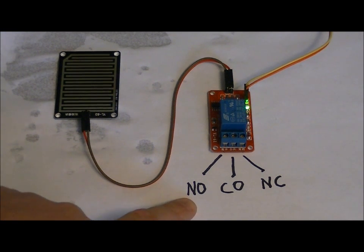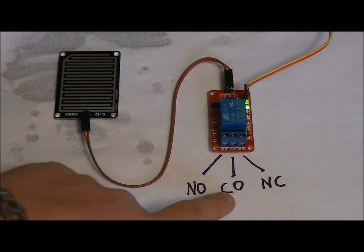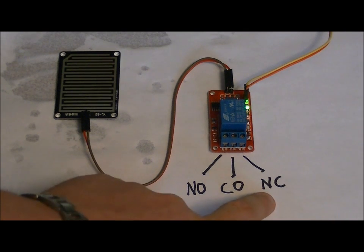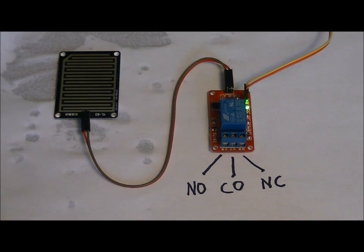The NO pin is the normally open pin. CO is common, and the NC pin is normally closed or normally connected. By default, when the relay is off—when there's no short on the ring detector—the common pin is connected to the normally closed pin.